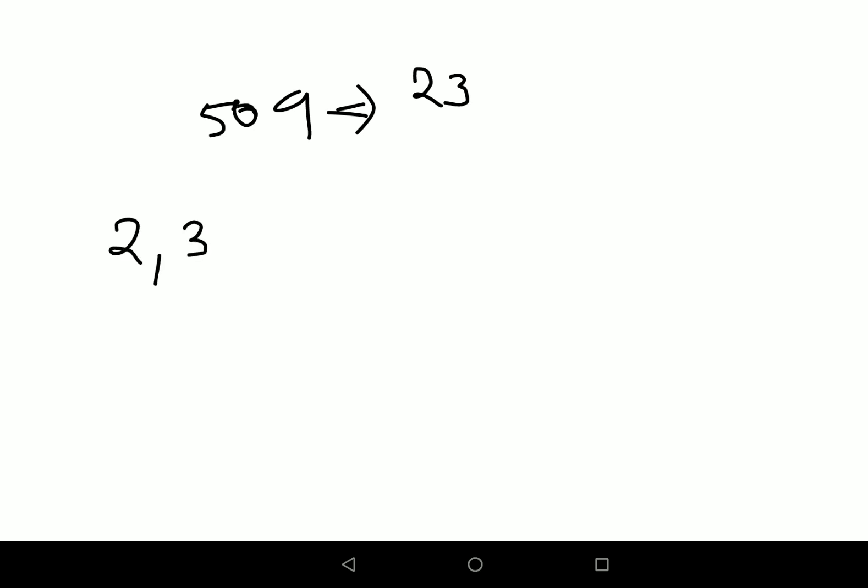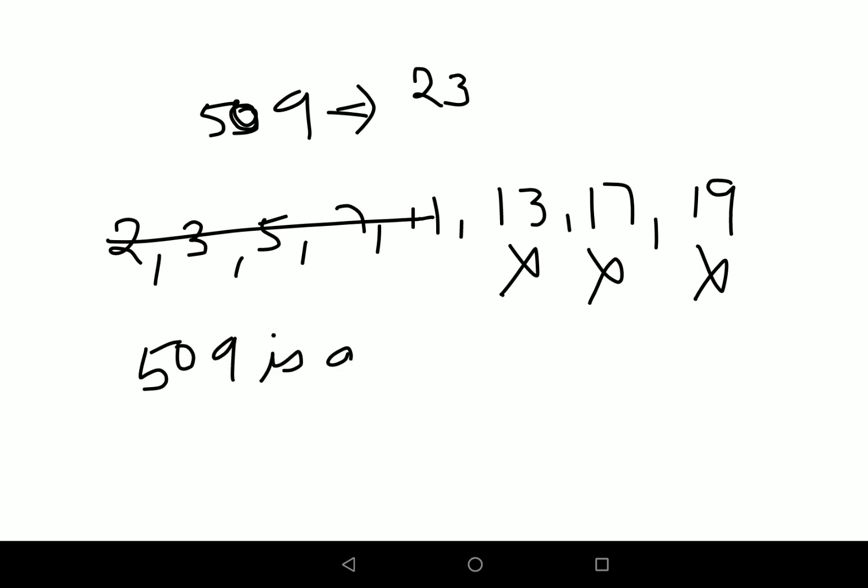Again 2, 3, 5, 7, 11, 13, 17, and 19. You will see that obviously this is not divisible by at least all these numbers, and if you check the divisibility rule of 13, 17, and 19, it is not divisible by any of these. So I can say that 509 is also a prime number.